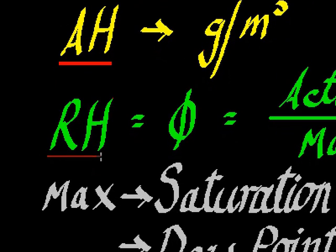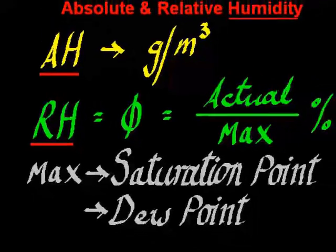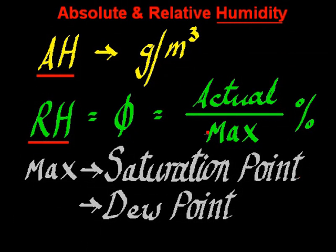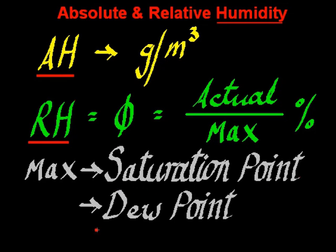Relative humidity is denoted by this symbol here, and is a measure of the actual amount of water in the atmosphere compared with the maximum amount of water that that atmosphere, or parcel of air, can contain at that temperature. And it's measured as a percentage. When a parcel of air contains its maximum amount of water that it can as water vapour, we call that saturation point, or dew point.